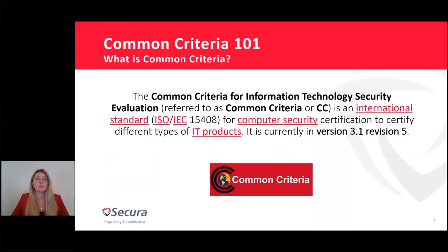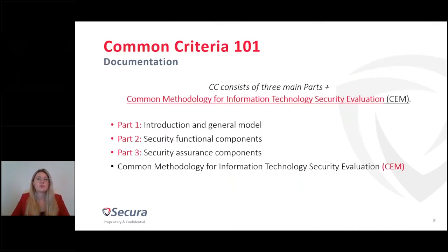So what is Common Criteria? The full name is the Common Criteria for Information Technology Security Evaluation, but it's normally referred to as Common Criteria or CC. It's an international standard for computer security evaluation for different types of IT products, version 3.1, revision 5. Document-wise, Common Criteria consists of three main parts: Part 1 is introduction and general model, Part 2 is security functional components, and Part 3 is security assurance components. Additionally, there is a separate but always-used companion document called the Common Methodology for Information Technology Security Evaluation, or CEM.